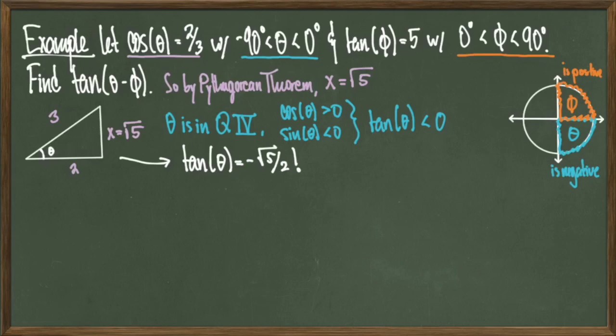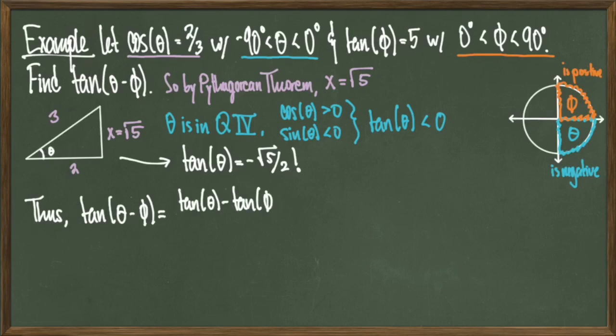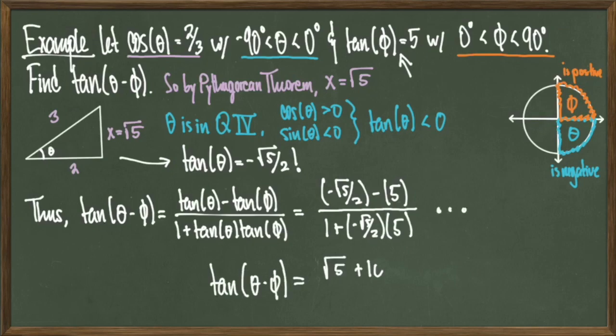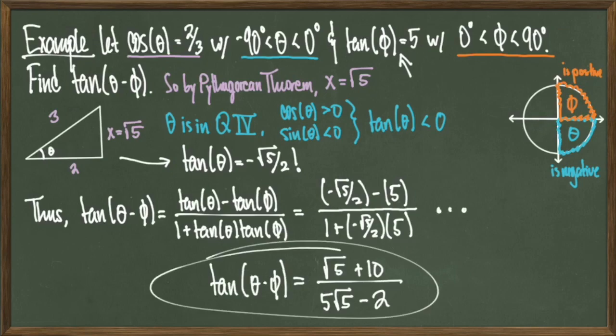We now know tangent of theta and tangent of phi. Therefore we can write tangent of theta minus phi as tangent of theta minus tangent of phi over 1 plus tangent of theta times tangent of phi. Plugging in the known values and simplifying through all the steps, we find that tangent of theta minus phi equals (√5 + 10) over (5√5 − 2), and we're done.